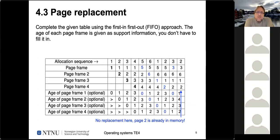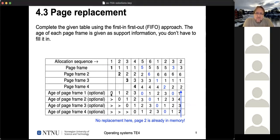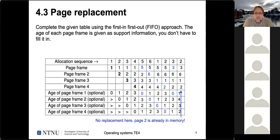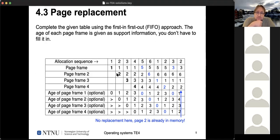The third theoretical exercise question was on page replacement using the FIFO algorithm — first in, first out. Internally we keep a record of the age of each page. Whenever a page is paged in from external storage its age is reset to zero, and the age of each page increases with each time step. Whenever a page needs to be replaced because memory is full, we replace the page that was brought into memory first — the one with the highest age. We already had the first four examples given.